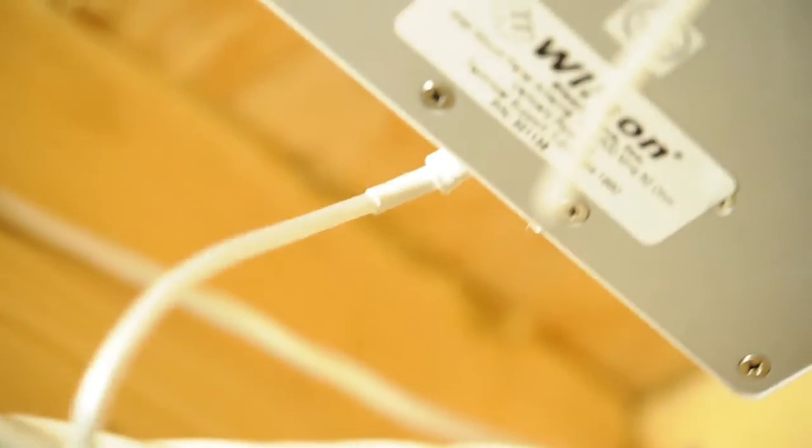So at this point, our Yagi is mounted on the peak of the roof of the building, cable is run down the side of the building and in. We've mounted our amplifier, so all that is left to do is mount the inside antenna.